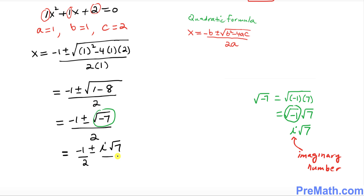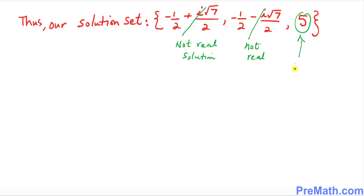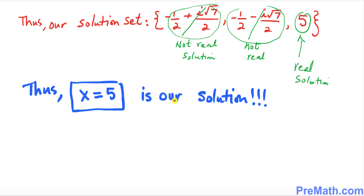So our solution set is negative 1 over 2 plus i times square root of 7 over 2, and negative 1 over 2 minus i times square root of 7 over 2, along with x equals 5. Notice that the two complex solutions are not real because they contain imaginary numbers. Therefore, x equals 5 is our only real solution.